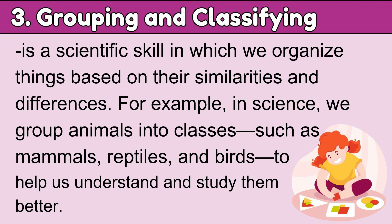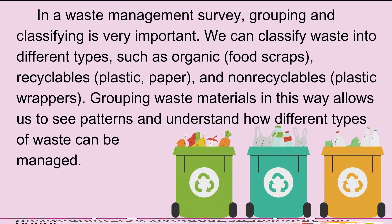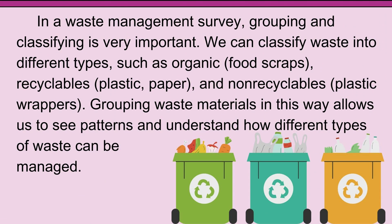Third, Grouping and Classifying is a scientific skill in which we organize things based on their similarities and differences. For example, in science we group animals into classes such as mammals, reptiles, and birds. In a waste management survey, we classify waste into different types such as organic, recyclables, and non-recyclables. Grouping waste materials in this way allows us to see patterns and understand how different types of waste can be managed.